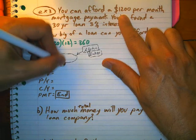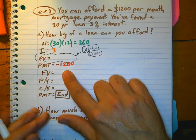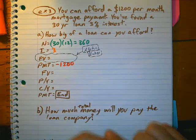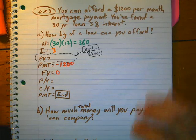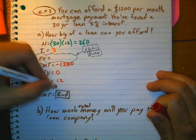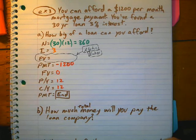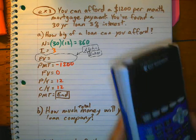So, we're going to put negative 1,200 because that's what we're going to pay each month. Future value, after we've done paying, we're going to have 0. We're going to pay monthly, and it's going to compound monthly. So, let's figure out how big a loan we can get.